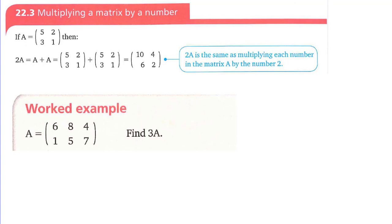Hi dear students, we are going to study in this video about multiplying a matrix by a number. We have matrix A given as [5, 2; 3, 1], and this is a 2 by 2 matrix. The order of the matrix is 2 by 2.